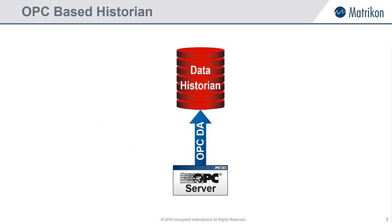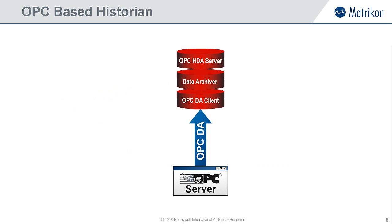So how does it work? Let's take a closer look at an OPC-based data historian. The OPC-based data historian contains three key components. Firstly, an OPC-DA client, which enables the historian to connect to OPC-DA servers in order to collect real-time data. The next piece is the archiver or core component, responsible for taking the collected data and storing it to disk. And lastly, an OPC-HDA server, which allows external OPC-HDA enabled tools to connect to the data archive and access the stored data.